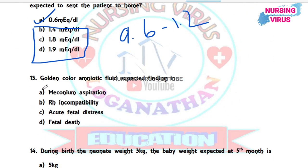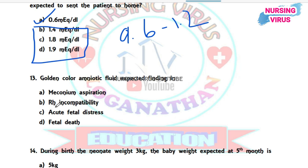Question 13: Golden color amniotic fluid is expected in which condition? The options are meconium aspiration, Rh incompatibility, acute fetal distress, and fetal death. The correct answer is Rh incompatibility — Rh incompatibility always produces golden colored amniotic fluid.